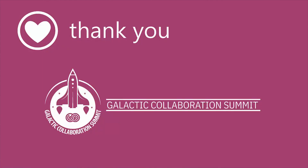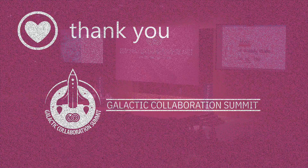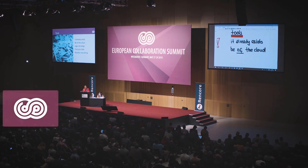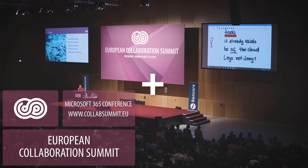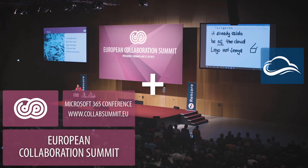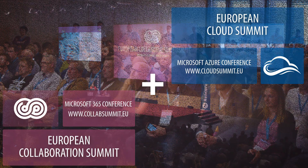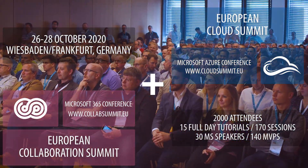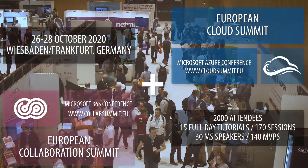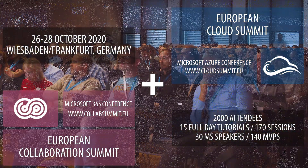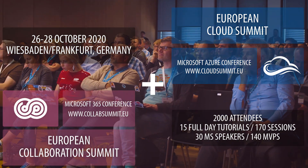That completes both the demo and the session. In the demo, we saw all the major components of a Power Automate flow: triggers, actions, conditions, loops, and variables. We also saw how to use the approvals connector. The demo, combined with the information in the slides, should be enough to get you started building flows yourself. Thank you very much, and I hope you've enjoyed this session. Thank you for being a part of the Galactic Collaboration Summit — join the community and meet world-class Microsoft and MVP speakers this autumn in Wiesbaden, Frankfurt, Germany, with 15 full-day tutorials and over 150 Microsoft 365 and Azure sessions at the combined European Collaboration Summit and European Cloud Summit, 26th to 28th October 2020.